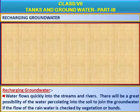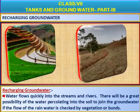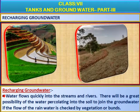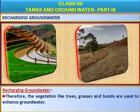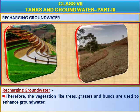Water flows quickly into the streams and rivers. There will be a great possibility of water percolating into the soil to join the groundwater if the flow of rainwater is checked by vegetation or bunds. Therefore, vegetation like trees, grasses, and bunds are used to enhance groundwater.